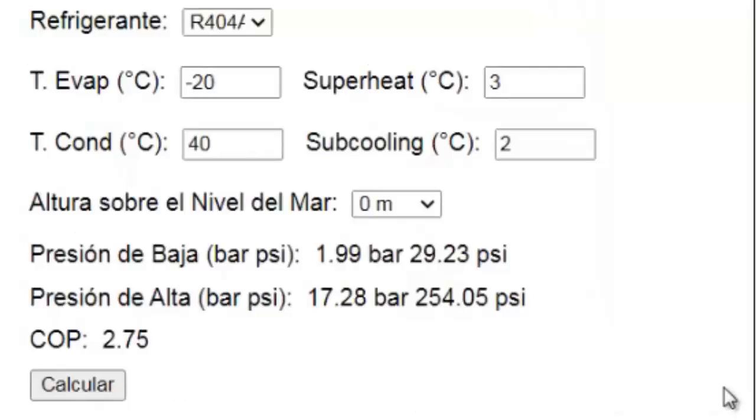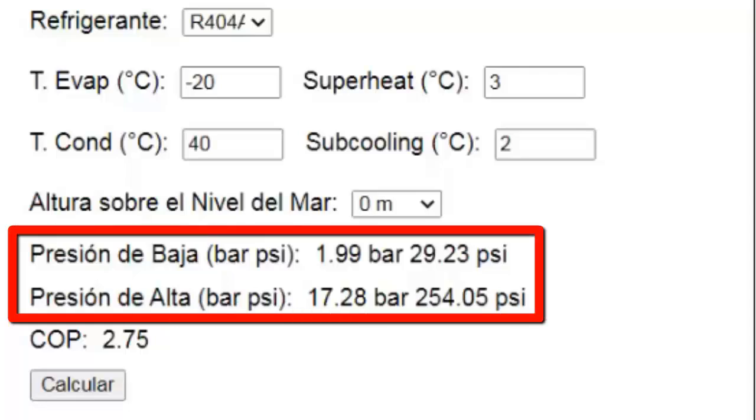For example, at sea level, the pressure values for a temperature of minus 20 degrees Celsius are as follows.